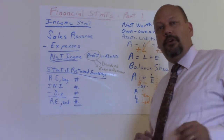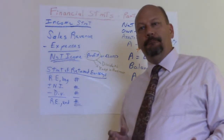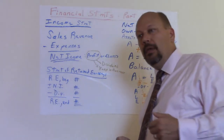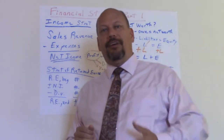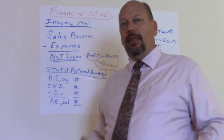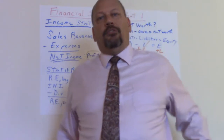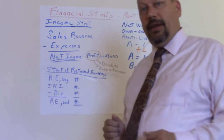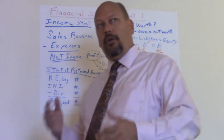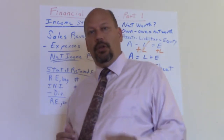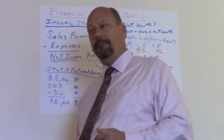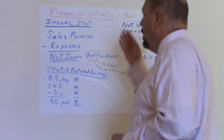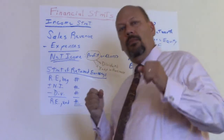Today we're going to start learning about financial accounting. This is financial statements part one. The best approach is to start off understanding your financial statements, then learn what goes into them, and then analyze them — that pretty much finishes financial accounting. The normal progression after that leads into managerial cost accounting for inside control of a business.